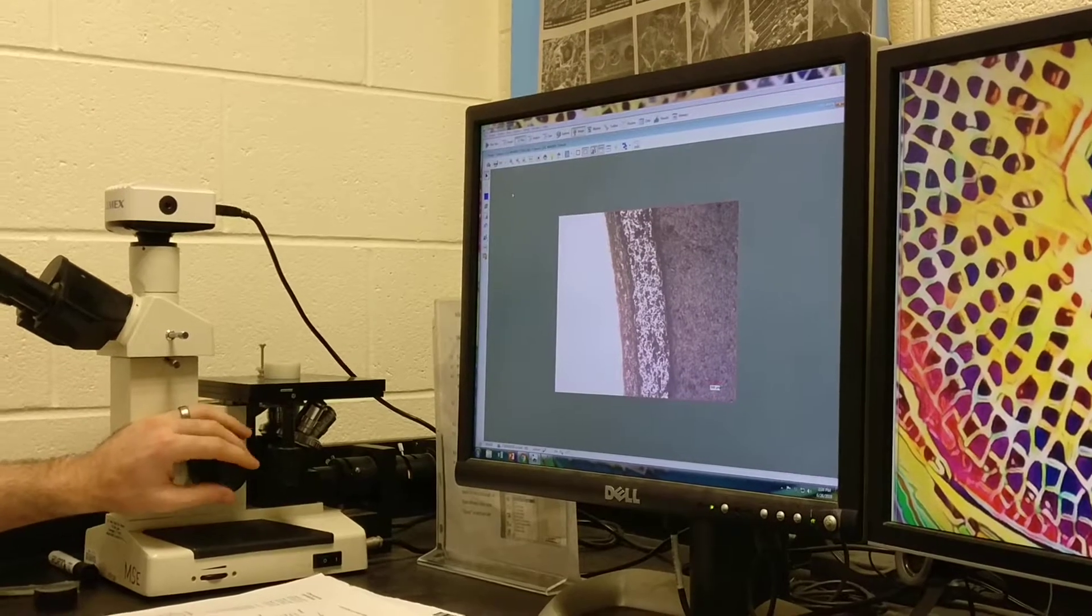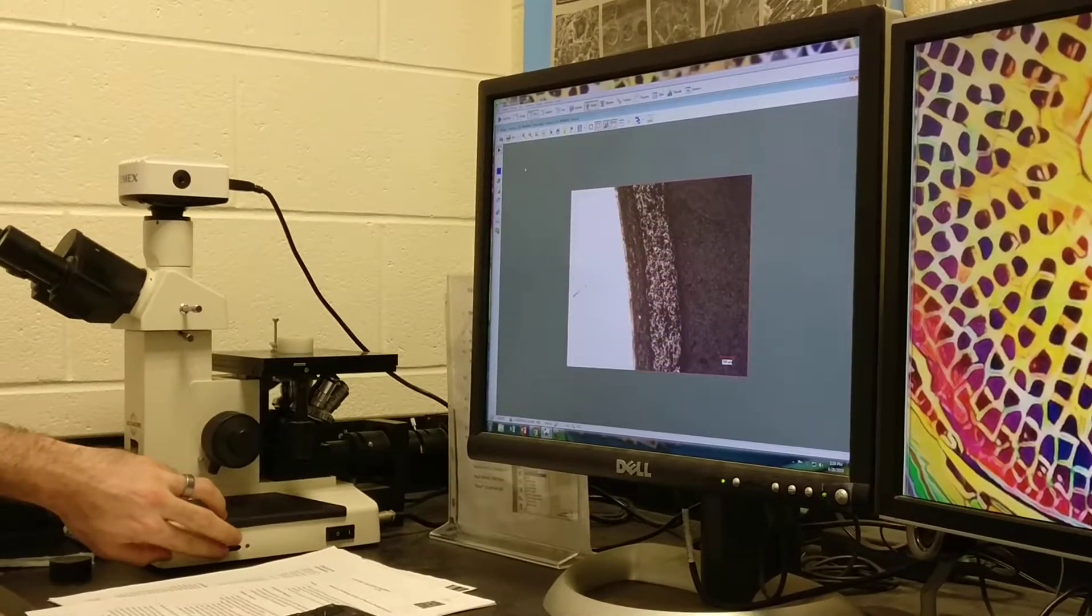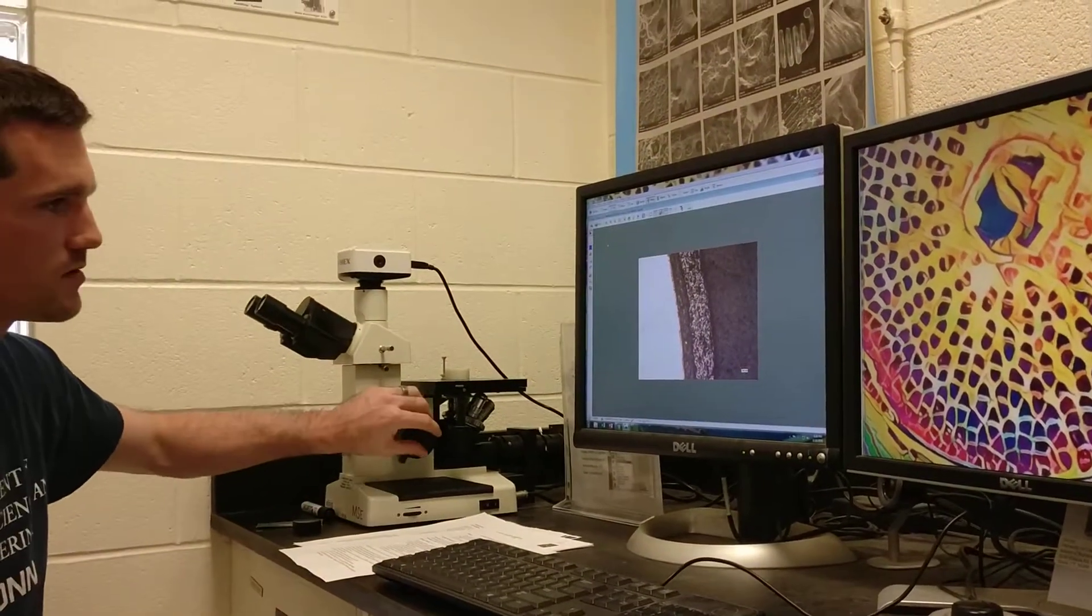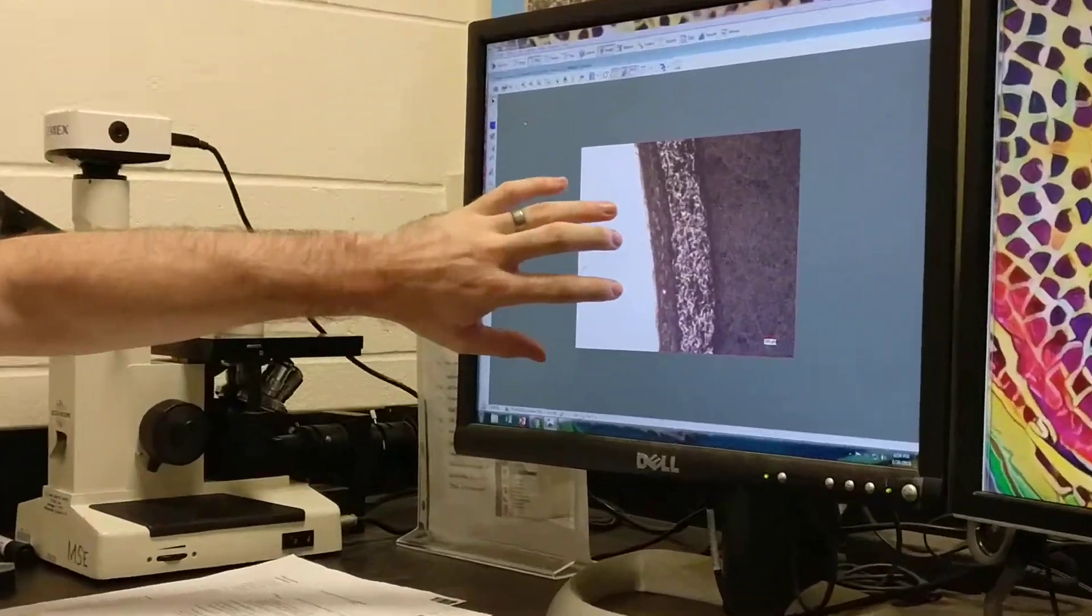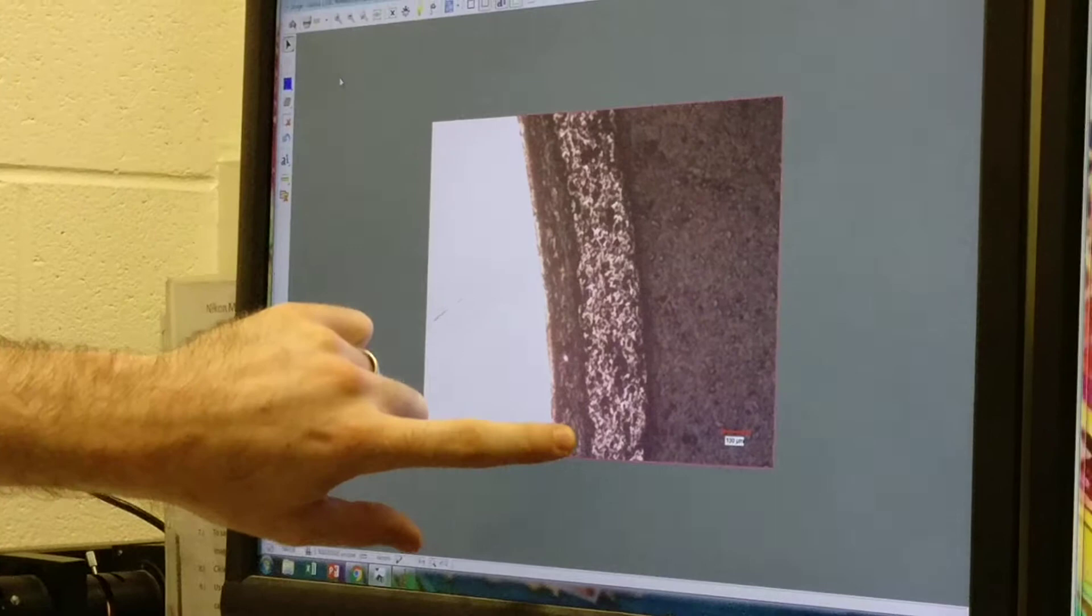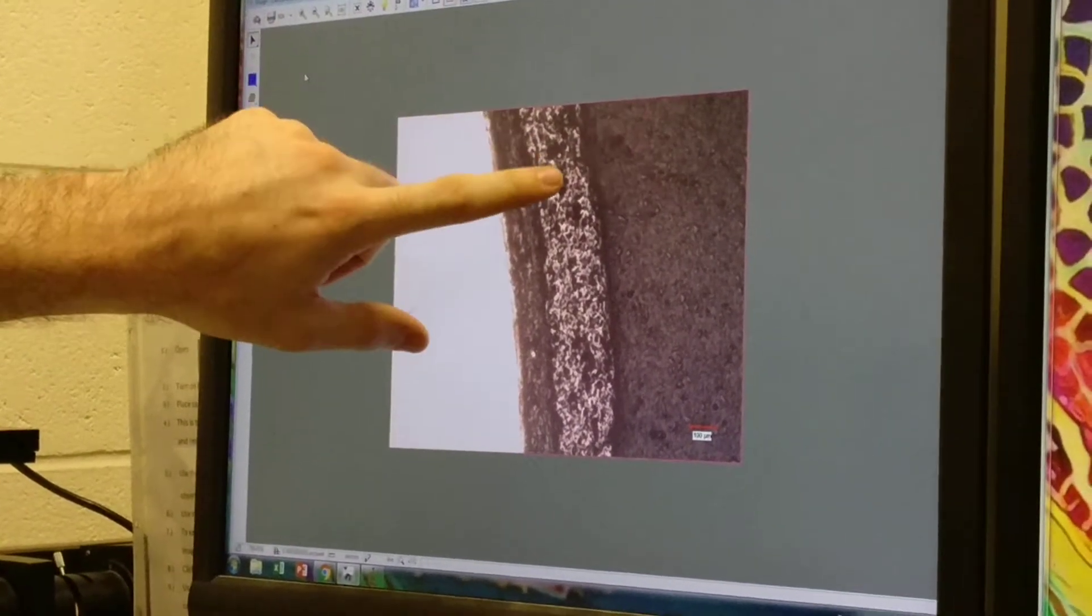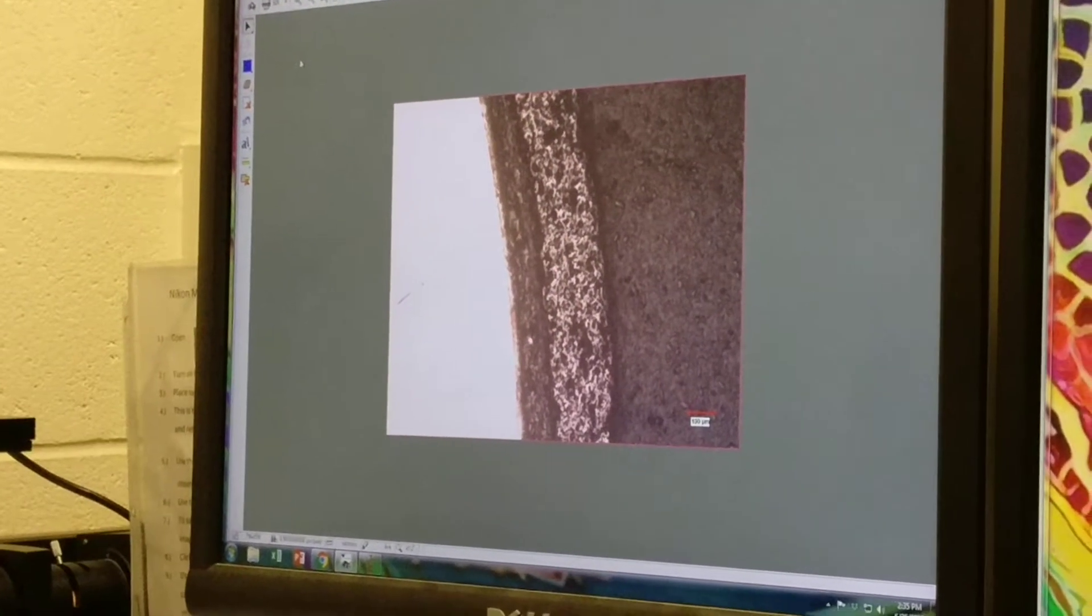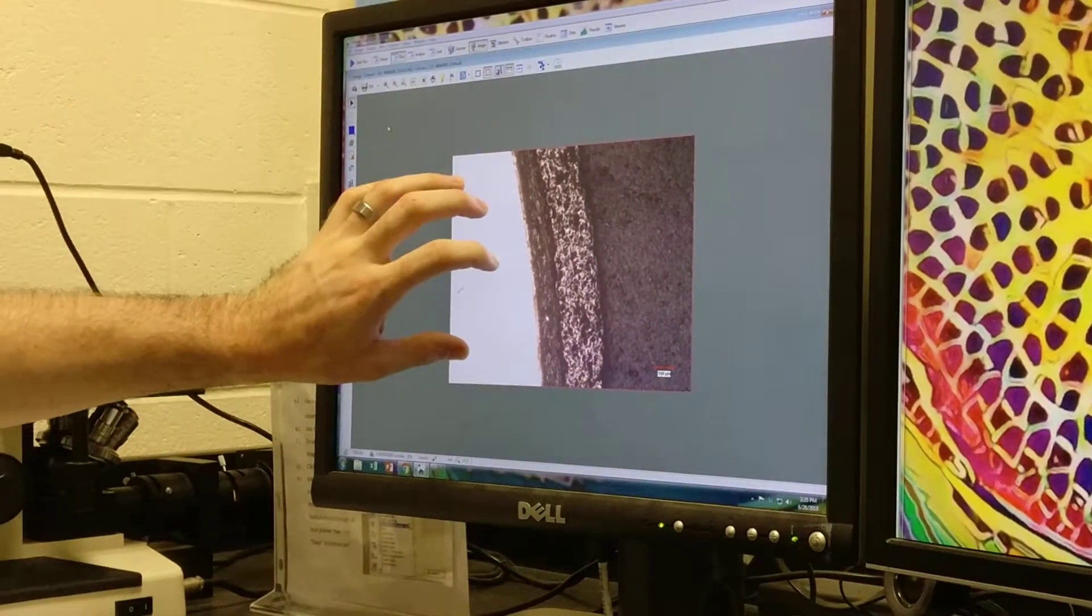We're going to notice something here which is that our thermal barrier coating actually consists of two layers, actually several layers but two main components. These are the substrate or the superalloy, we have an initial coat here which is called a metallic bond coat or MBC, then there's the thermal barrier coating or TBC.